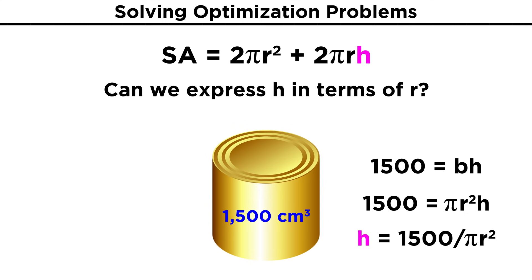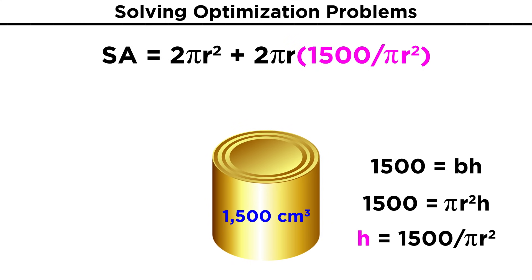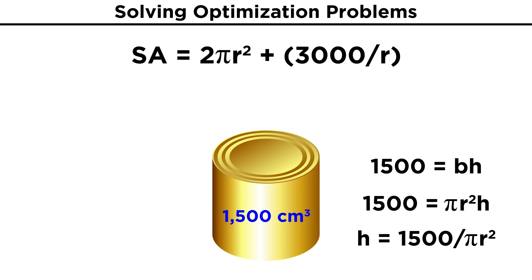So let's plug that in for h in our surface area equation. Then we can distribute this term, and we end up with 2πr² + 3000/r.